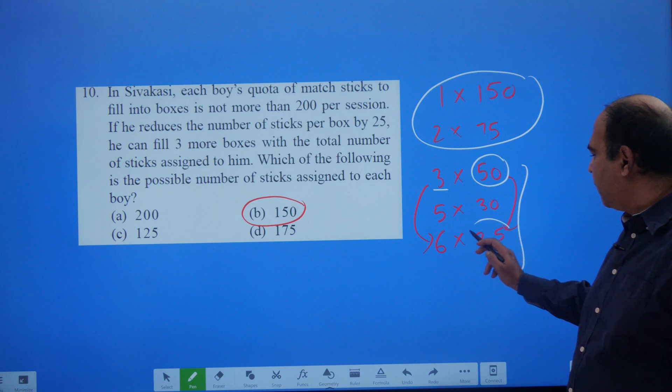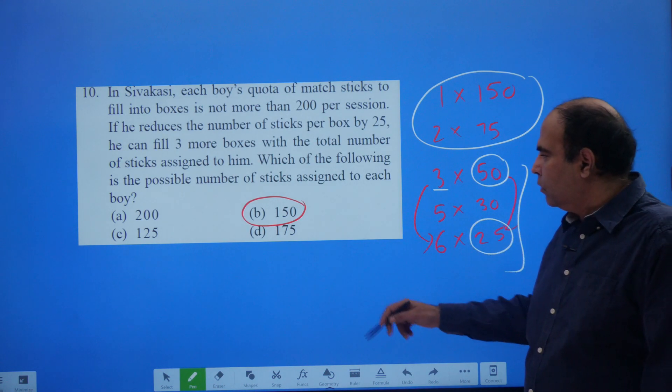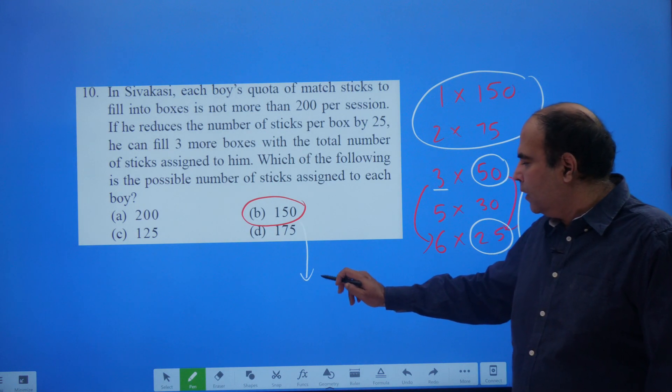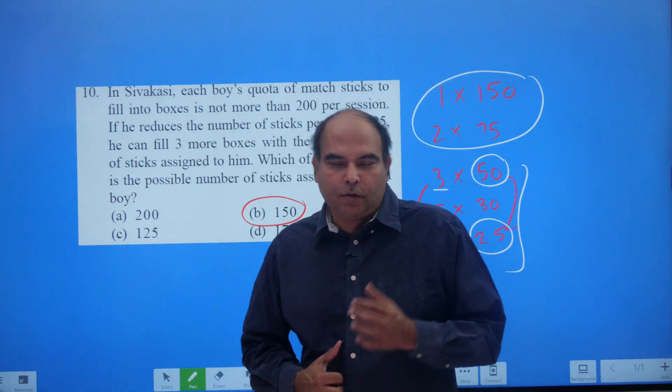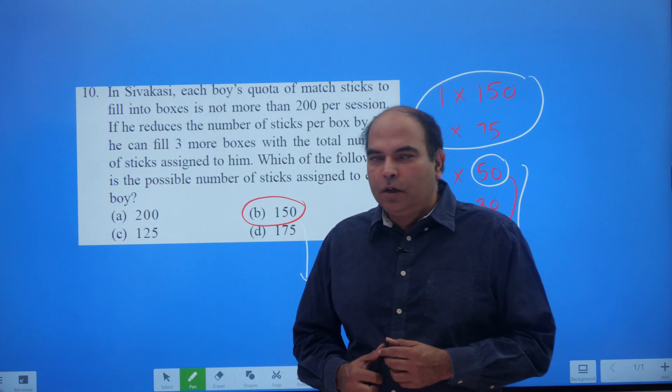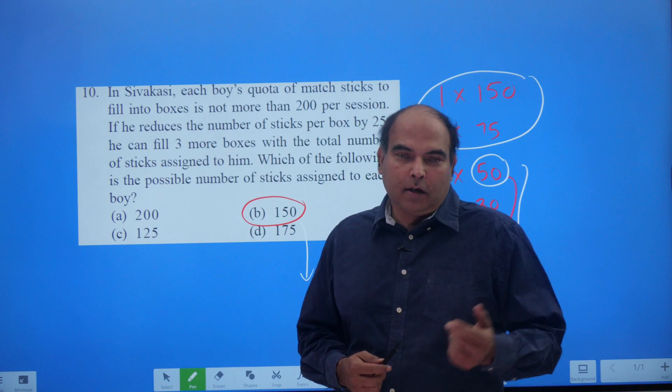So this works perfectly. If the initial number of sticks per box was 50, he would fill 3 boxes. If the number of sticks per box is reduced by 25, he is filling three more boxes. So this is the correct answer, and that's what the question talks about. So option B is right. So I hope you enjoyed this, and I'll see you very soon with the next quants question of the day and also other programs happening on the channel.